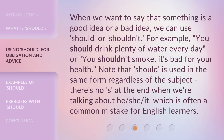When we want to say that something is a good idea or a bad idea, we can use 'should' or 'shouldn't'. For example: 'You should drink plenty of water every day,' or 'You shouldn't smoke — it's bad for your health.' Note that 'should' is used in the same form regardless of the subject. There's no 's' at the end when we're talking about he, she, or it, which is often a common mistake for English learners.